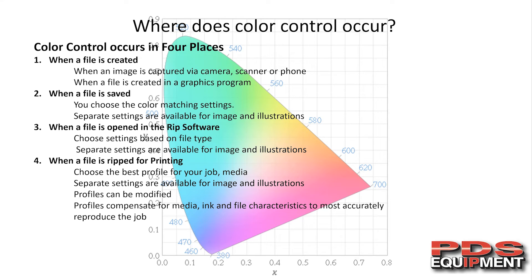Third, when a file is opened in the RIP software — you can choose settings based on the file type, and separate settings are available for image and illustration. Fourth, when a file is RIPped for printing — that's where we always think we're going to do our color matching. When you're doing it in the RIP, you're just going to choose the best profile for your job. Separate settings again for image and illustration. Profiles can be modified, and the profile's job is to compensate for media, ink, and file characteristics to most accurately reproduce the job.